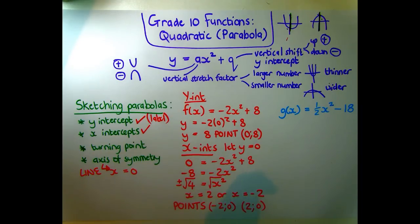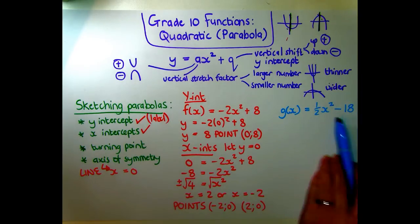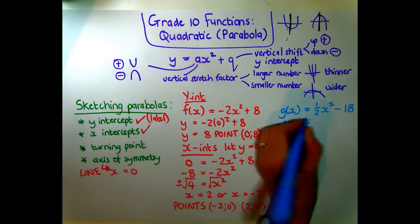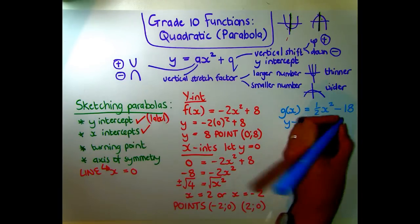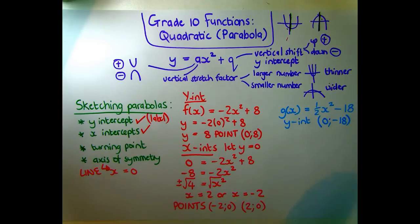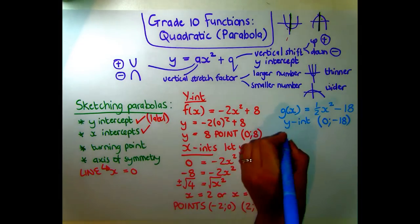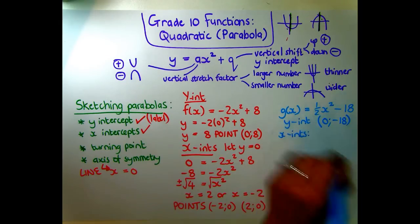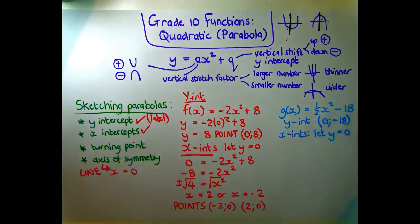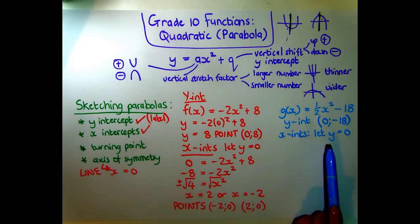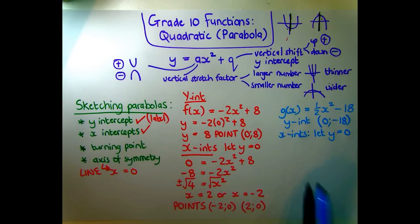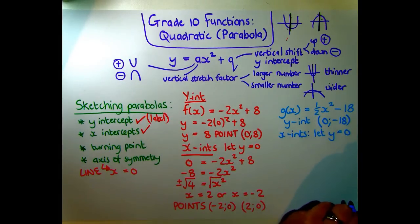Moving on to g(x), we follow the same steps but I'll shortcut the y-intercept — you can just read it off. The y-intercept is the point (0, -18), which will be plotted quite far down. For the x-intercepts we let y = 0. Don't confuse the y-intercept — where x is 0 — with x-intercepts, where y is 0. It's a very common error.